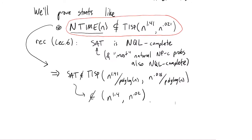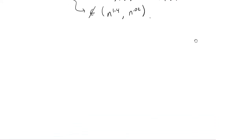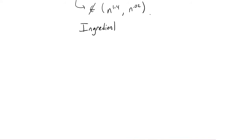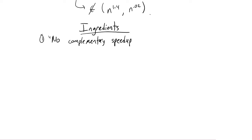Now let me tell you about the ingredients we'll use in these theorems. Ingredient number one is something I'll call, following Williams, the no complementary speedup theorem. This theorem is kind of like a time hierarchy theorem for the alternating time complexity classes.